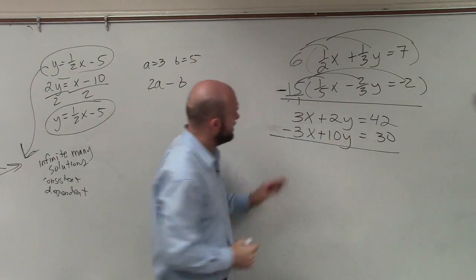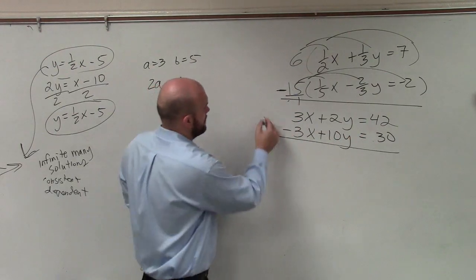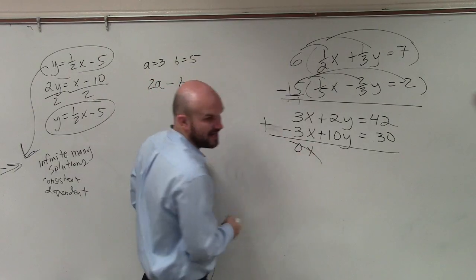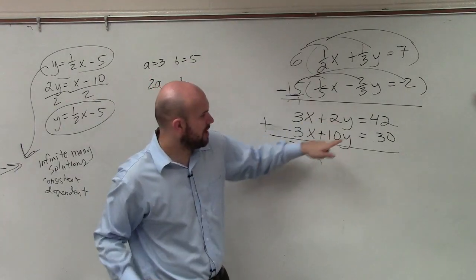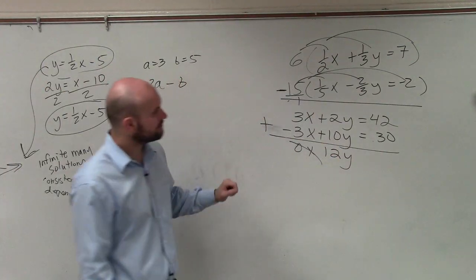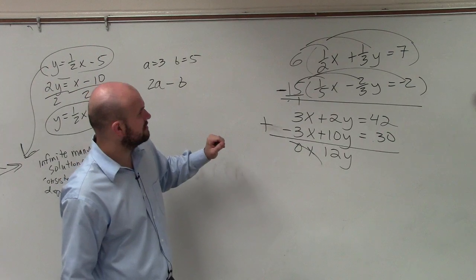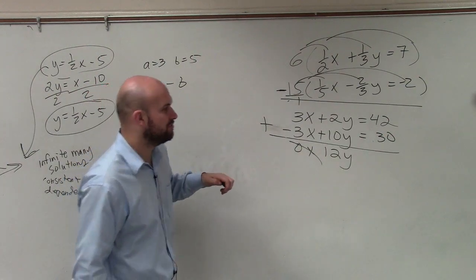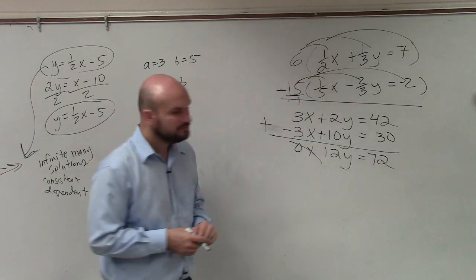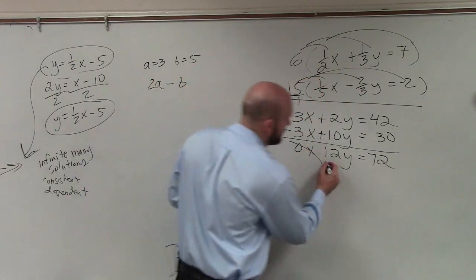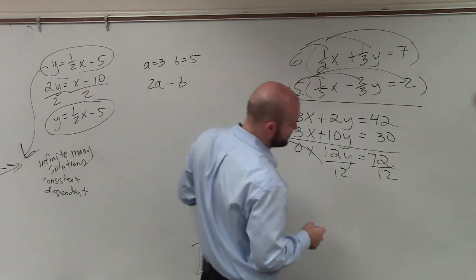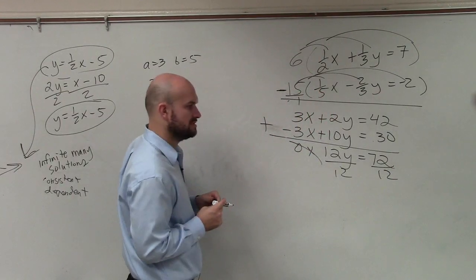So let's look at what we have. 3x plus negative 3x is 0x. Now that got eliminated. 2y plus 10y is 12y. And 42 plus 30 is going to be 72. Now I can solve for y. And that's going to be 6.